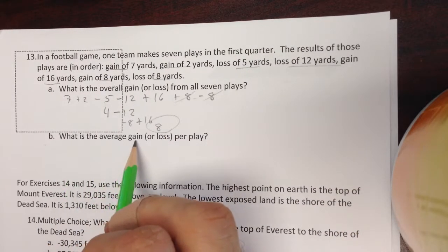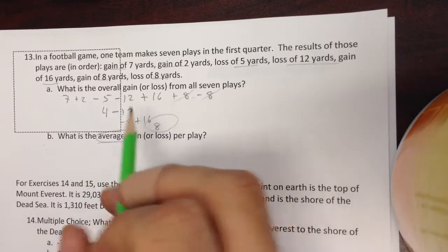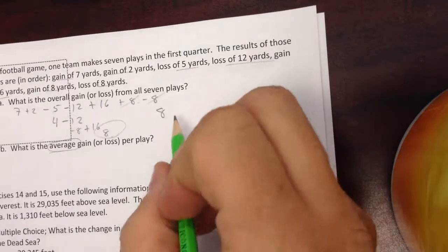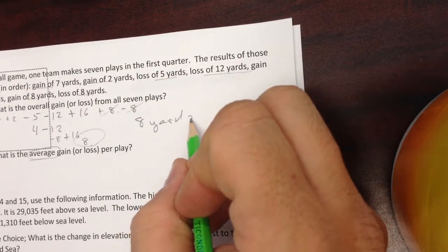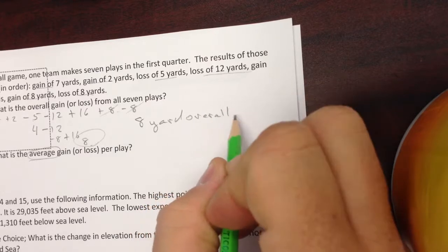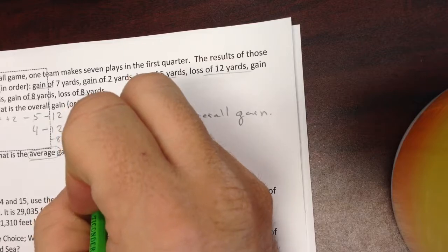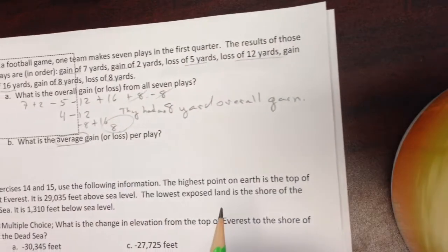Now what is the average gain or loss per play? Well for average, I want to add them all up, which I did. So 8 yard overall gain, I should make a sentence, they had an 8 yard overall gain.